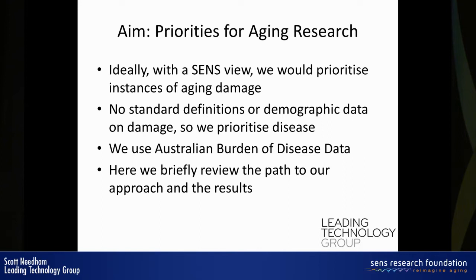I deal with senescence here, and following up on other talks, we would like to prioritise aging, damage, and senescence. But unfortunately, there are no standardised across-the-board measures for these, so we've had to prioritise diseases and causes of death — for which there is a lot of data. We're lucky to have some of the leading population health scientists in Australia, and we've used their data. I'll briefly discuss the approach we used to develop our prioritisation and some results at a high level.